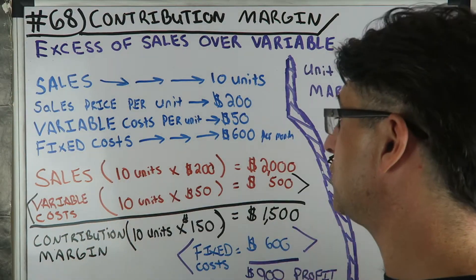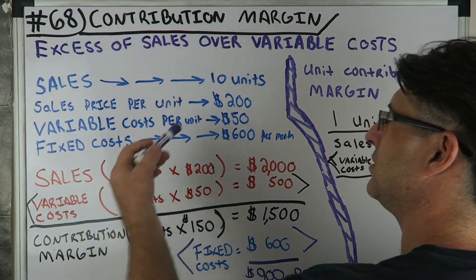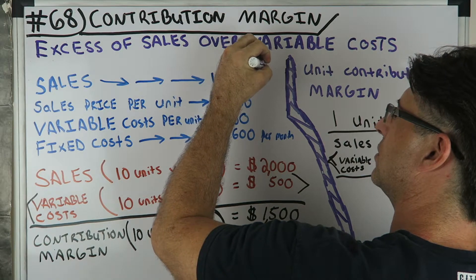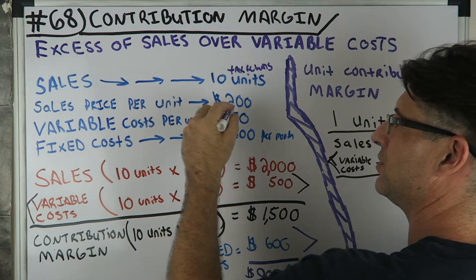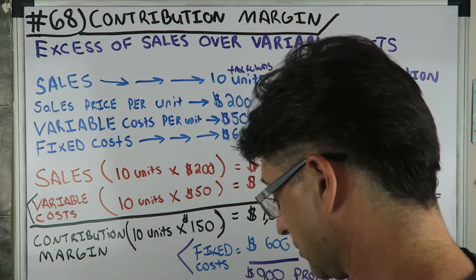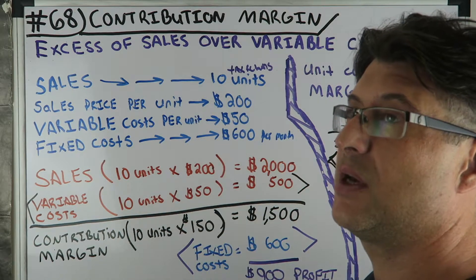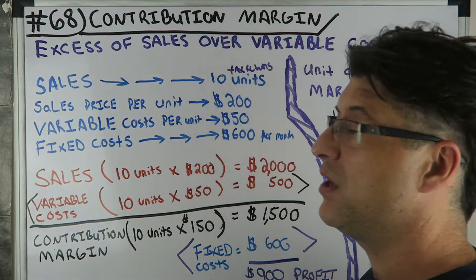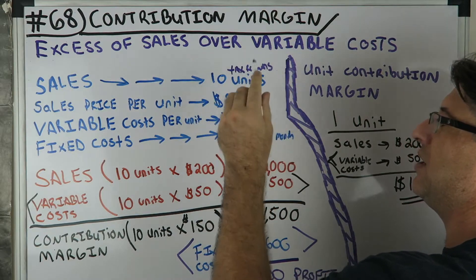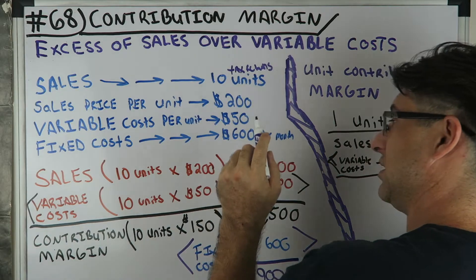We're going to show the contribution margin and then the unit contribution margin. Let's say you sell 10 units — 10 tax returns. Each tax return sells for $200. Variable cost per unit is $50, because that's how much the tax software costs per return. Fixed cost is $600 — that's rent, phone, and WiFi — it stays the same no matter how much I use per month.